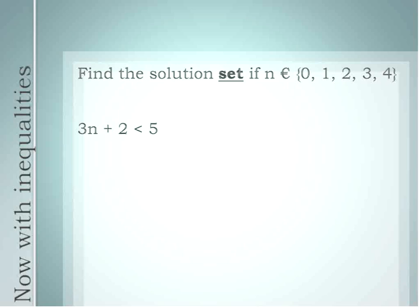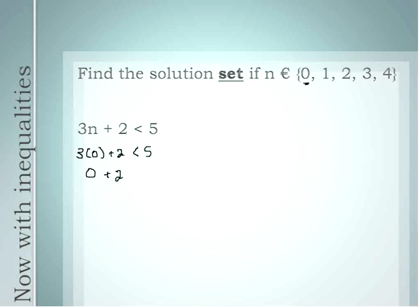With inequalities, you may get a series of answers — a solution set. We're going to substitute these values into this inequality. With inequalities — less than, greater than, less than or equal to, greater than or equal to — you have to substitute every single number from the set, and your solution may have multiple answers. Let's start with 0: 3 times 0 plus 2 is less than 5. 3 times 0 is 0, and 0 plus 2 is 2. 2 is definitely less than 5, so we'll give that a check mark and 0 is part of our solution.